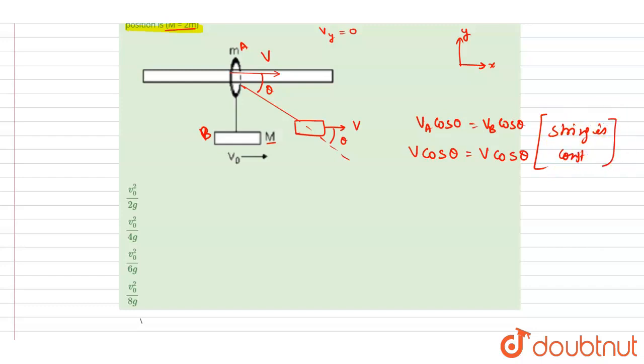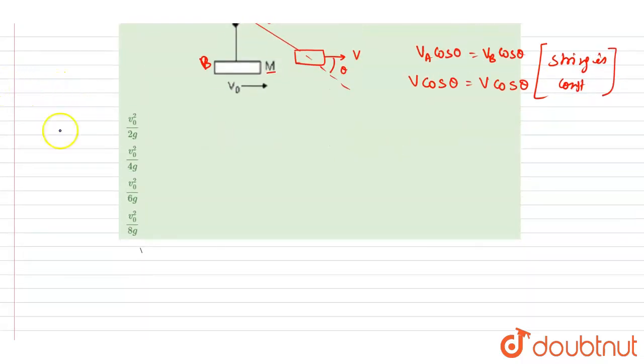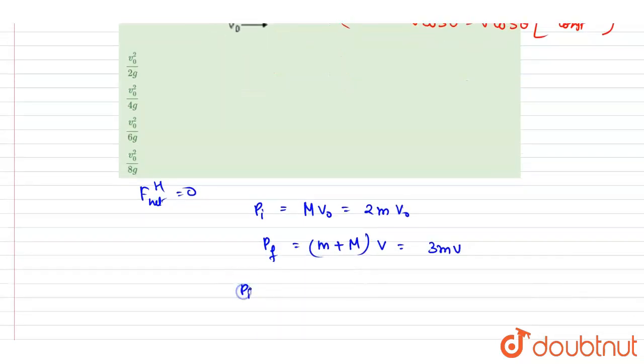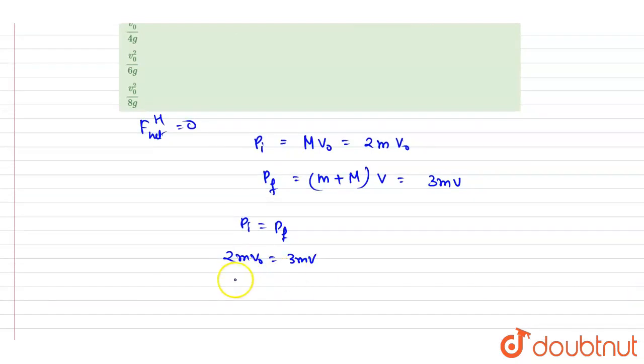Now moving ahead, momentum here will remain conserved in horizontal direction because the net force in horizontal direction is zero. So initially the m mass was having v0 velocity. M is having, or capital M is 2m. Finally they two are moving with same velocity v. So again M is 2m, so it will be 3m. So just equate the two. I will write down 2m v0 equals 3m v, so v is 2v0 by 3.